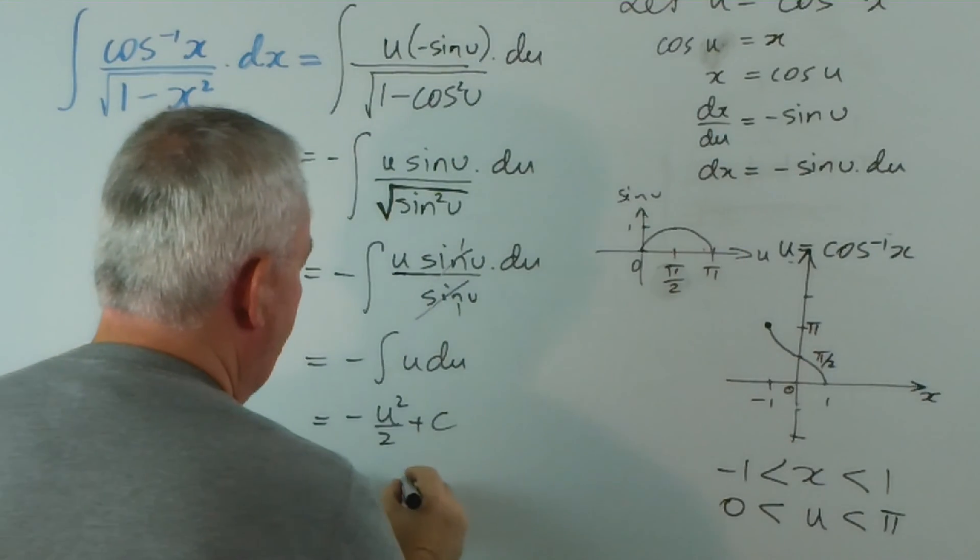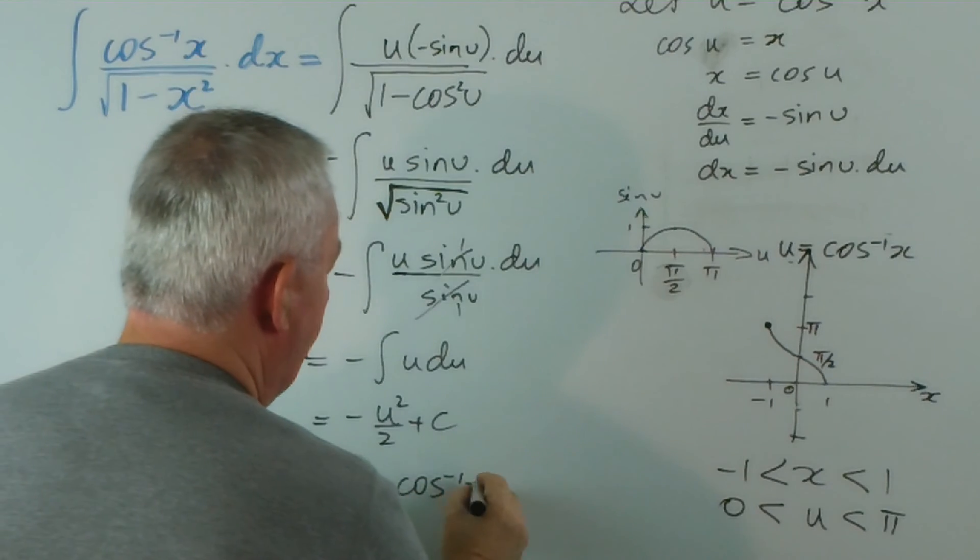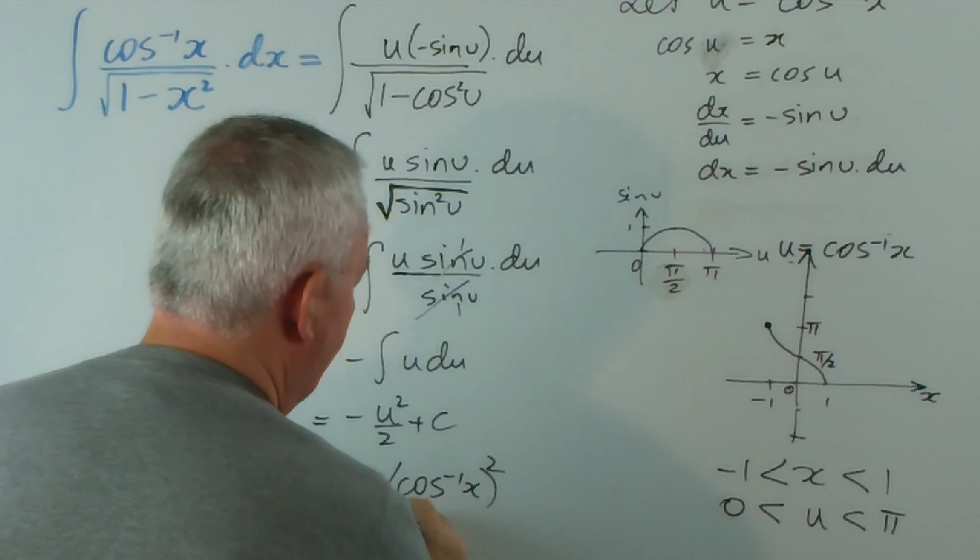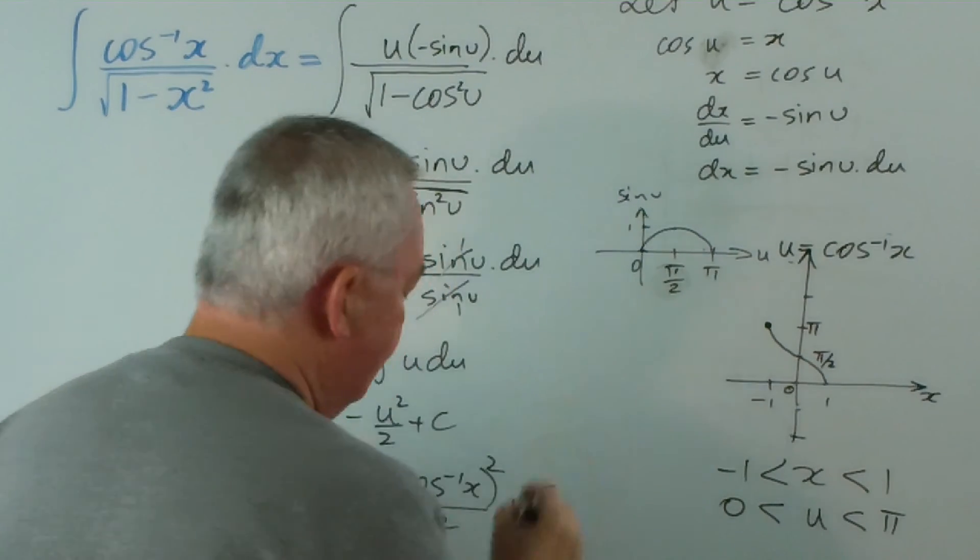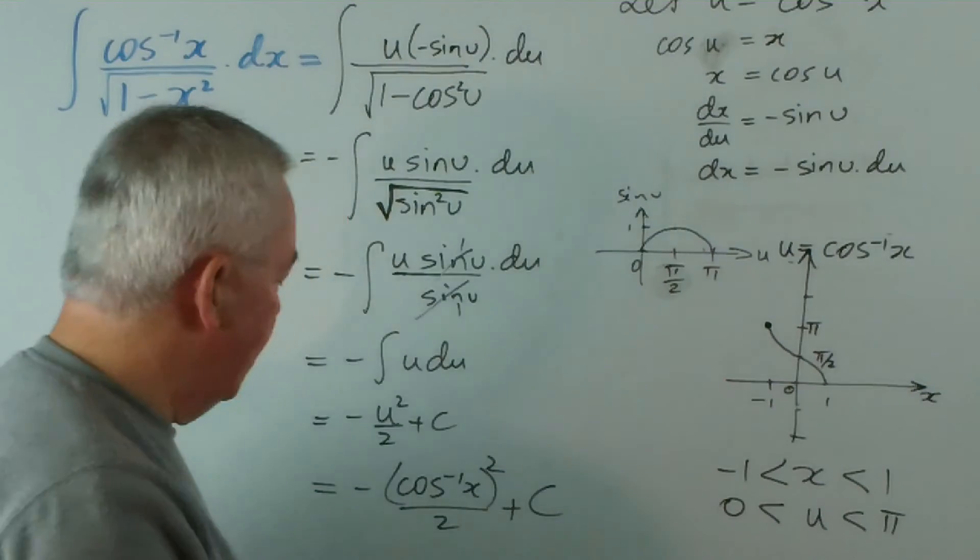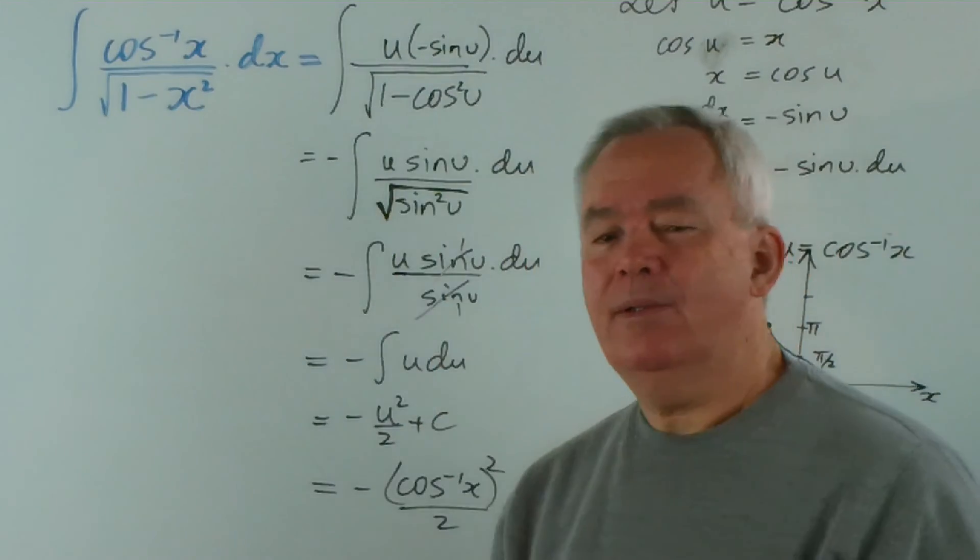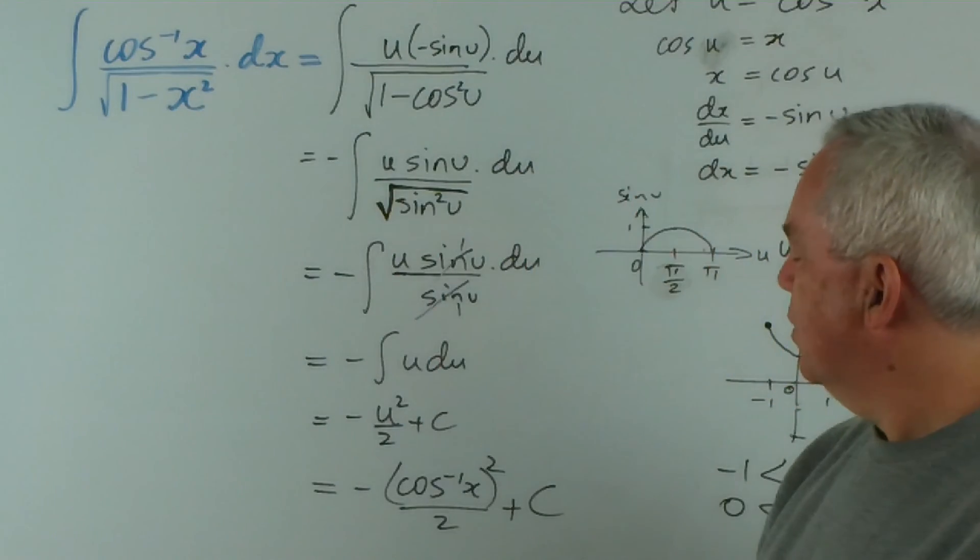And then we substitute back for u, which was the inverse cosine of x, and that would be minus inverse cosine of x squared on 2 plus c. And there's a solution. A little bit unusual, isn't it, having a square of an inverse trig function?